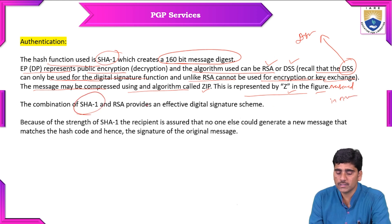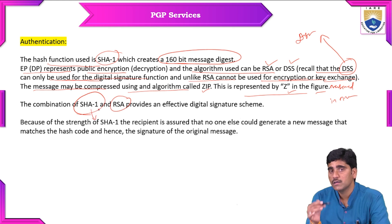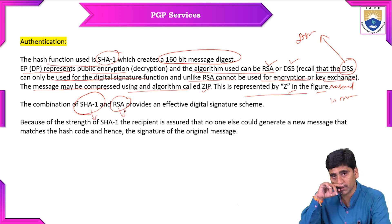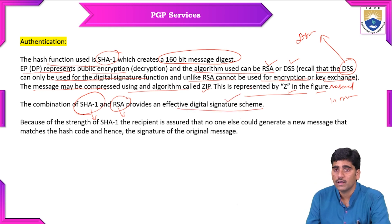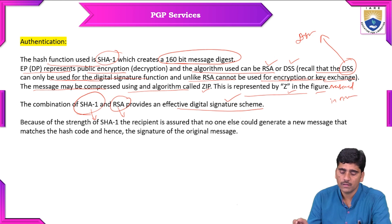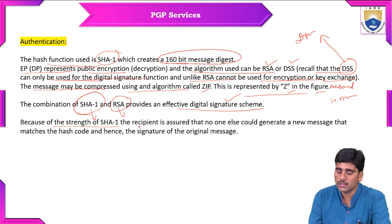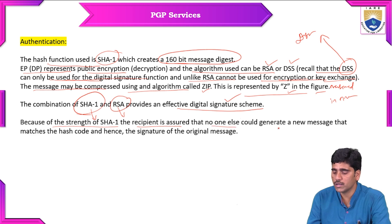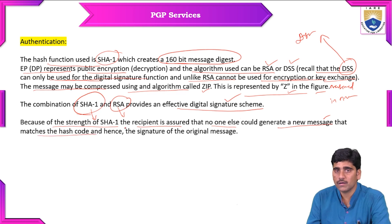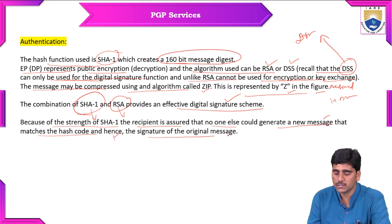The combination of both SHA-1 and RSA — one for providing digital signature and one for providing encryption — gives an effective digital signature scheme. Because of the strength of SHA-1, the recipient is assured that no one else could generate a new message that matches the hash code, hence matching the signature of the original message.